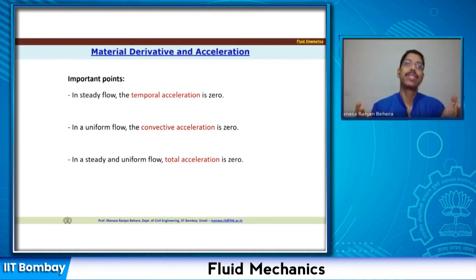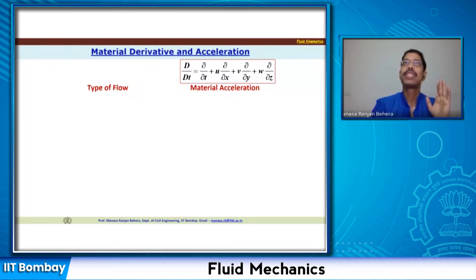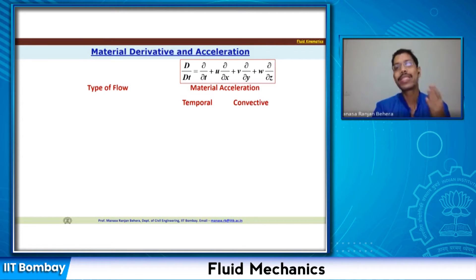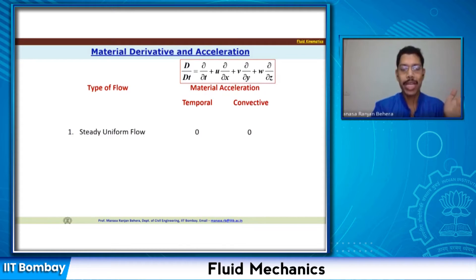If I have both a steady flow and a uniform flow, then the total acceleration is going to be zero. Now let us look at different types of flow and which acceleration they represent. On the left side I have the type of flow, and on the right I write the material acceleration, which has two components: temporal acceleration and convective acceleration. For a steady uniform flow, both temporal and convective acceleration are zero.